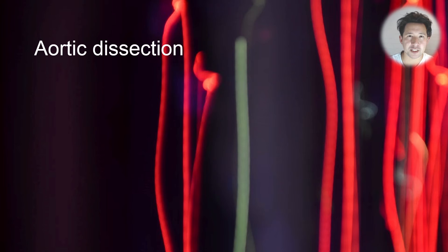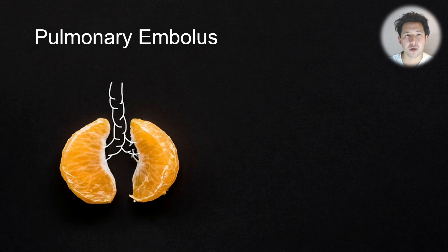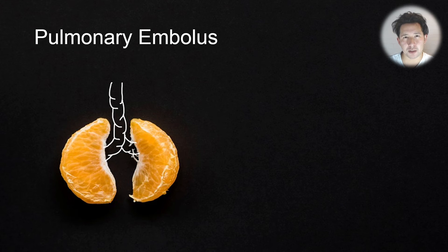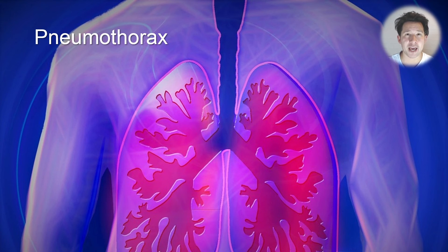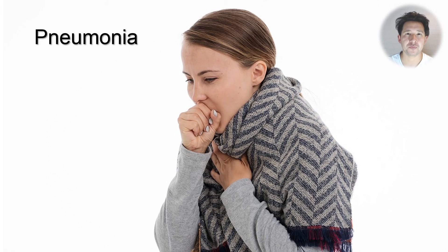In the vascular system, we have aortic dissection, which is another important life-threatening emergency to consider. Moving on to respiratory, the big one is pulmonary embolus, which is a blood clot in one of the pulmonary arteries. We also have pneumothorax — that's when air gets into the thoracic cavity but not in the lungs themselves — and then pneumonia, of course.